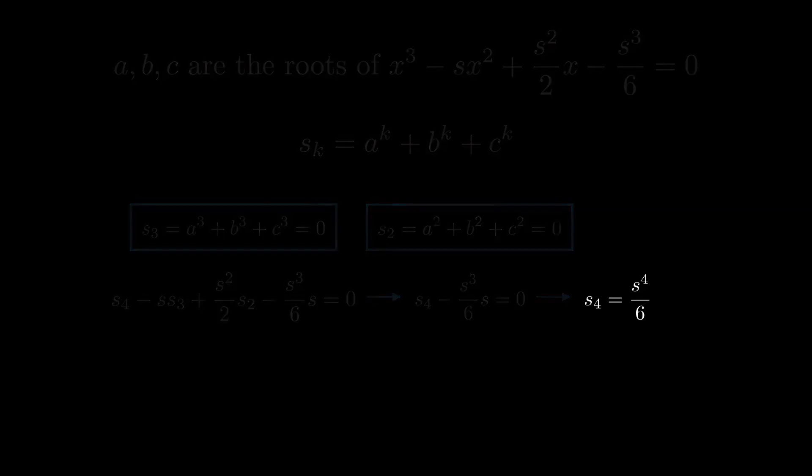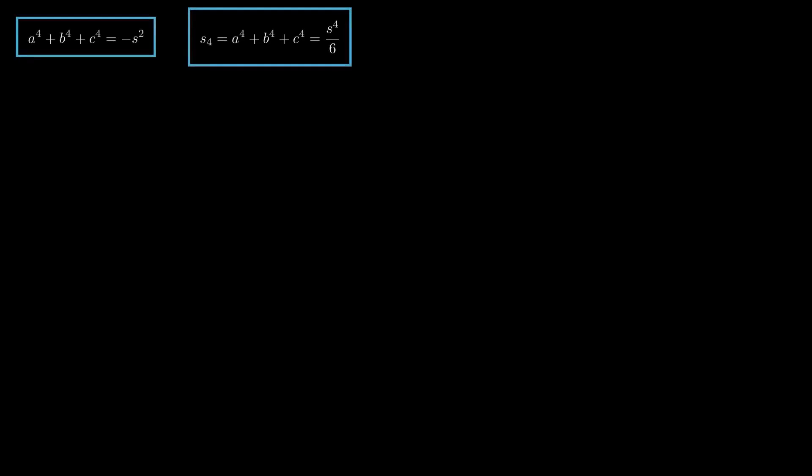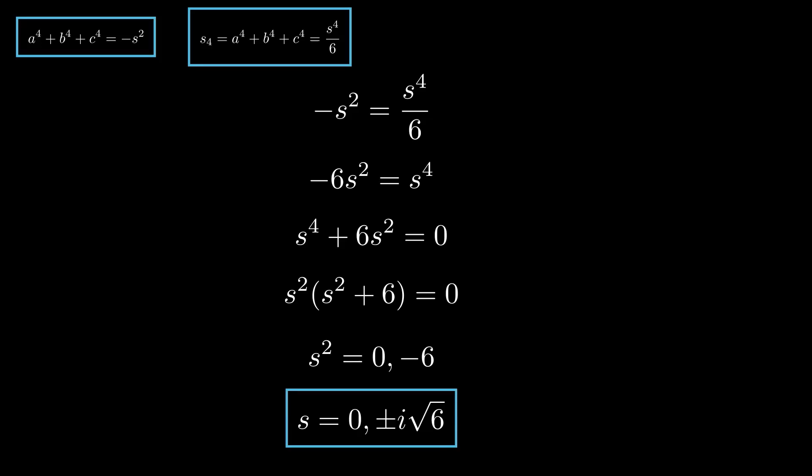At this point, we've calculated A to the fourth plus B to the fourth plus C to the fourth in two different ways. Equating these two results and simplifying, we find S squared equals zero, or S squared equals negative six. So, the possible values for S are S equals zero, or plus minus I times the square root of six.